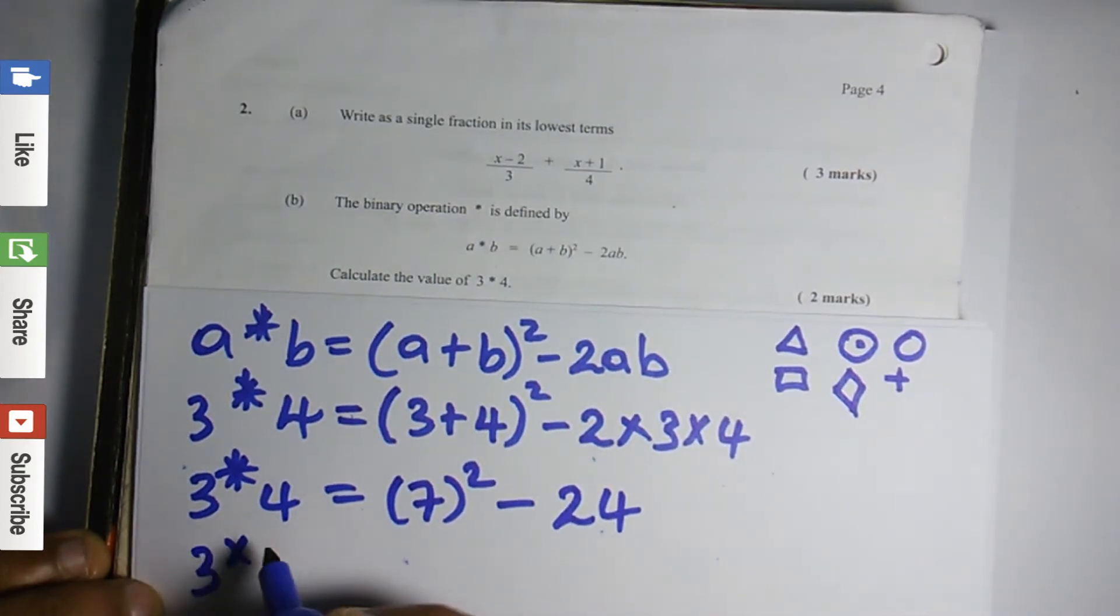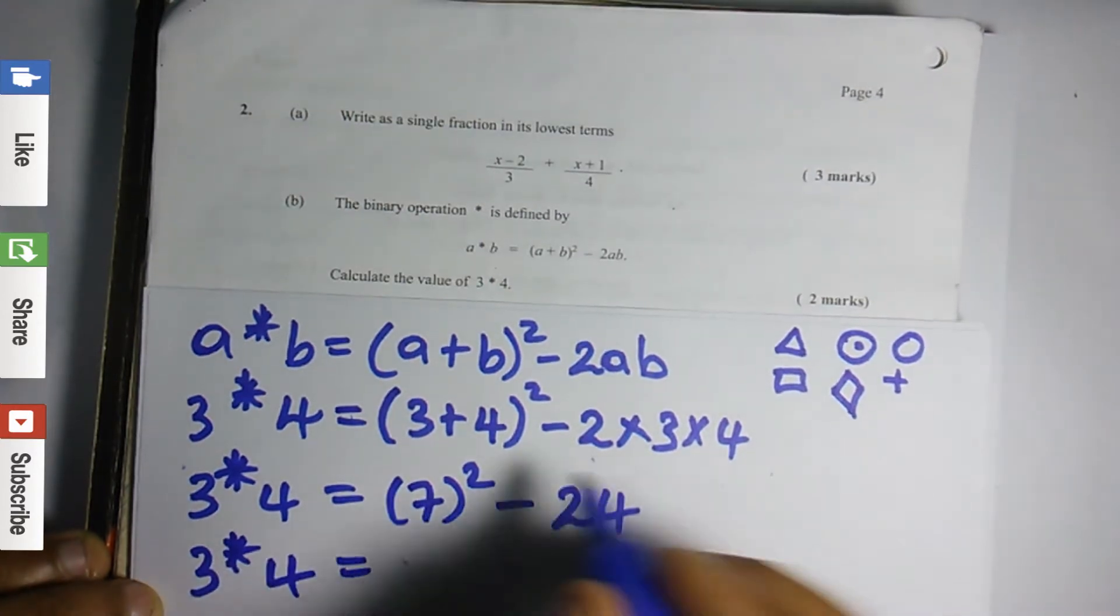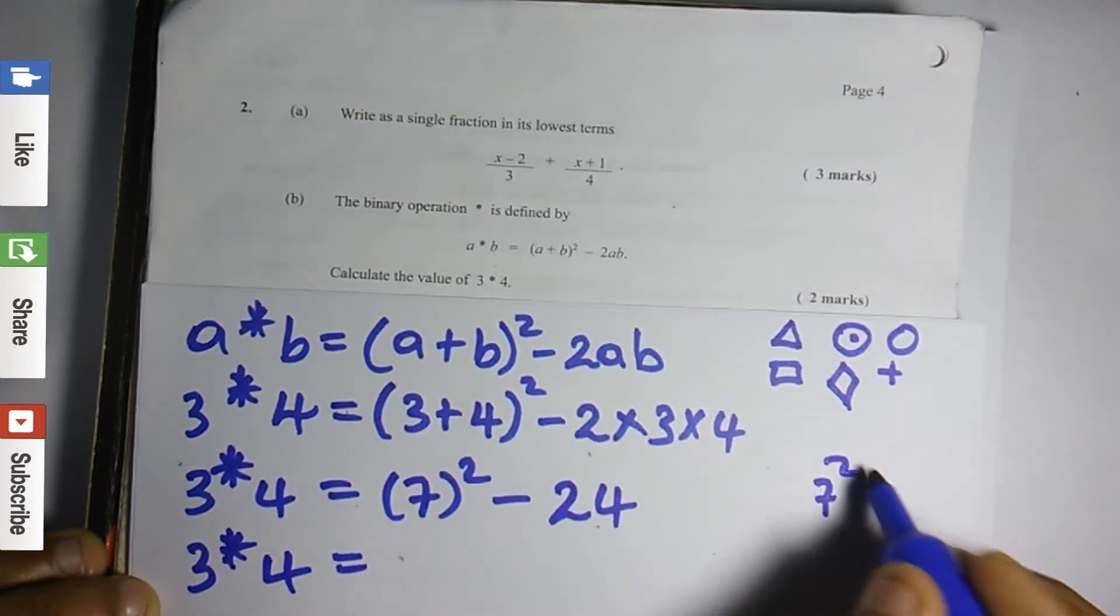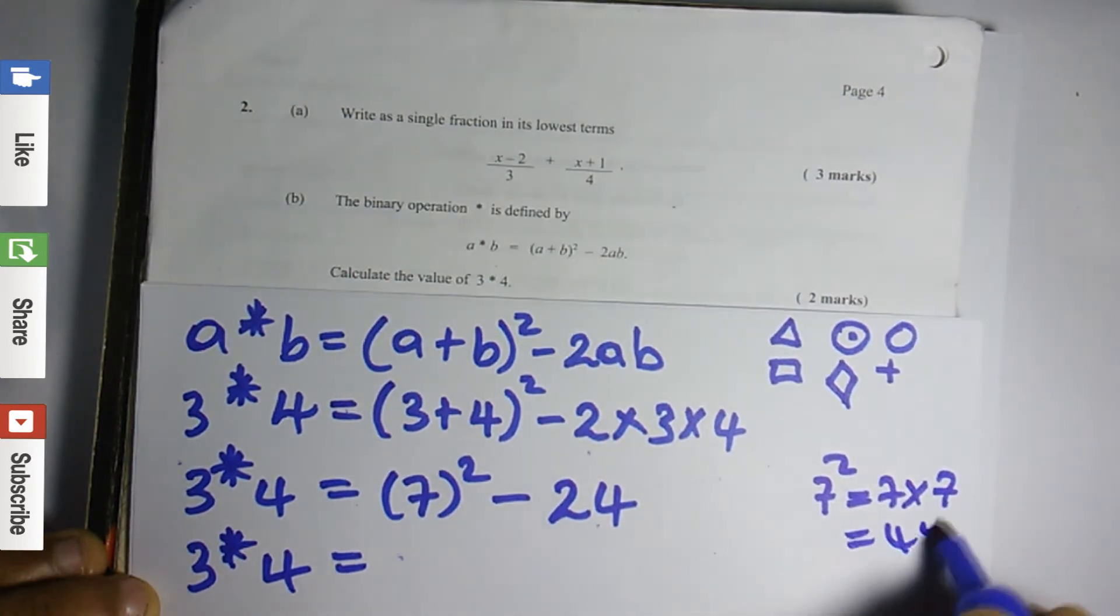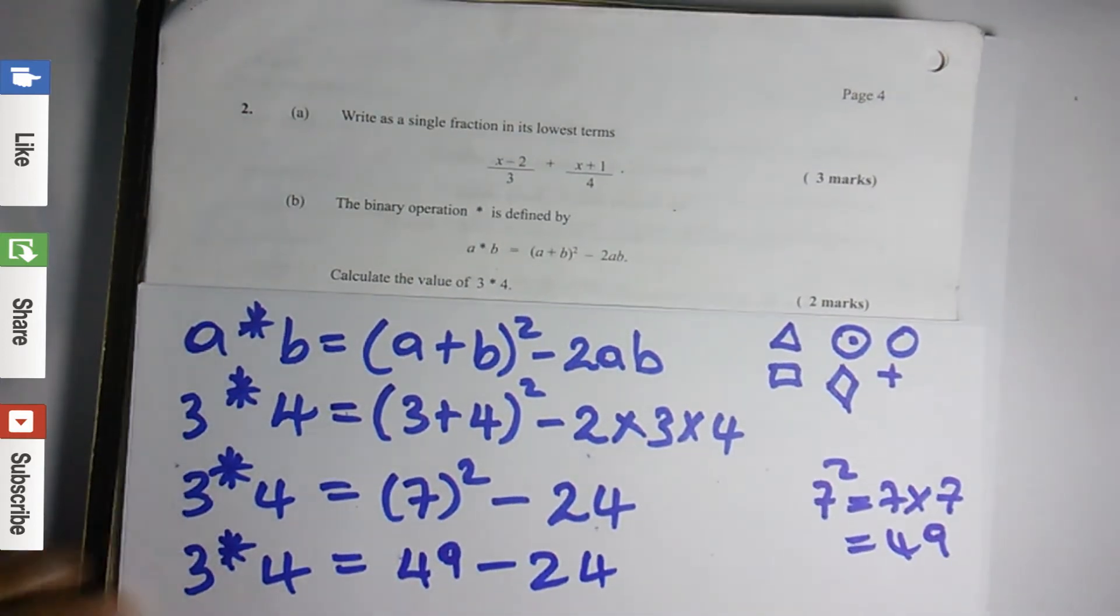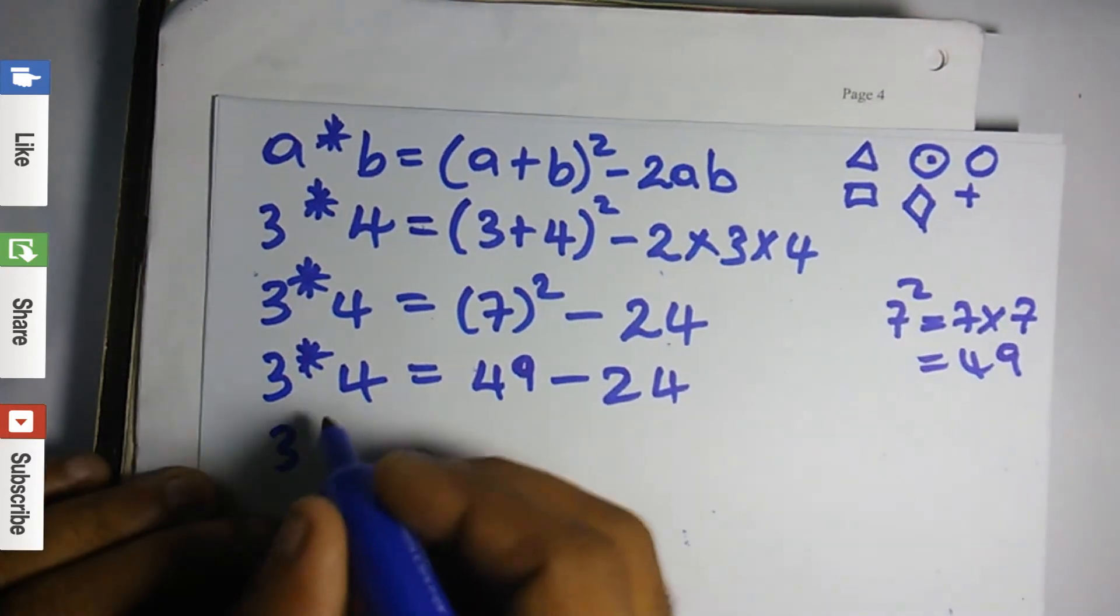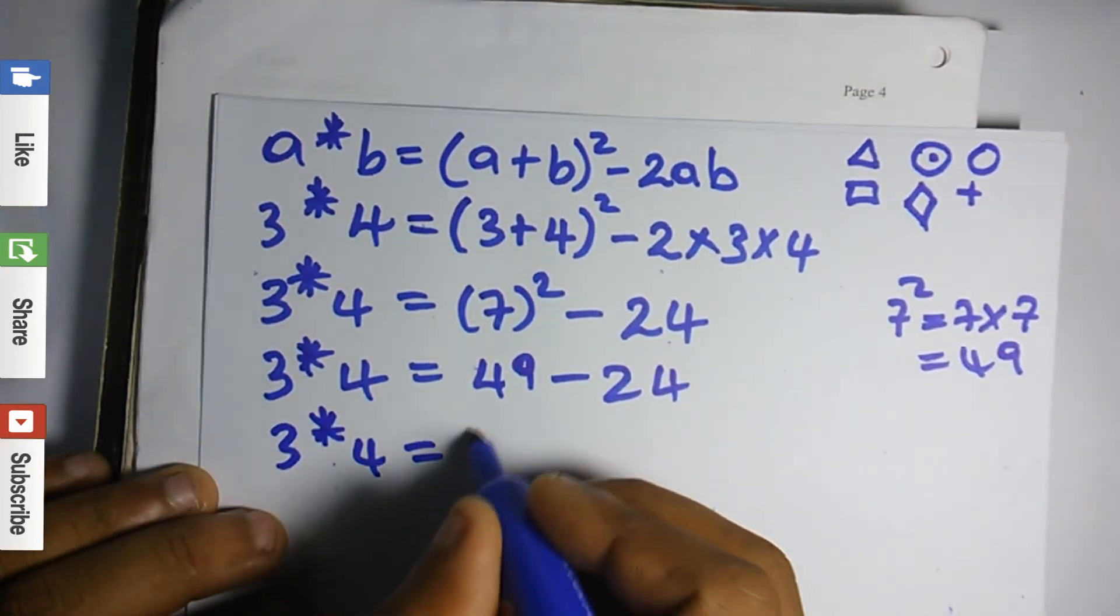So 3 star 4 equals 7 squared. 7 squared is 7 multiplied by 7, which equals 49. So 7 squared is 49 minus 24. So 3 star 4 equals 25.